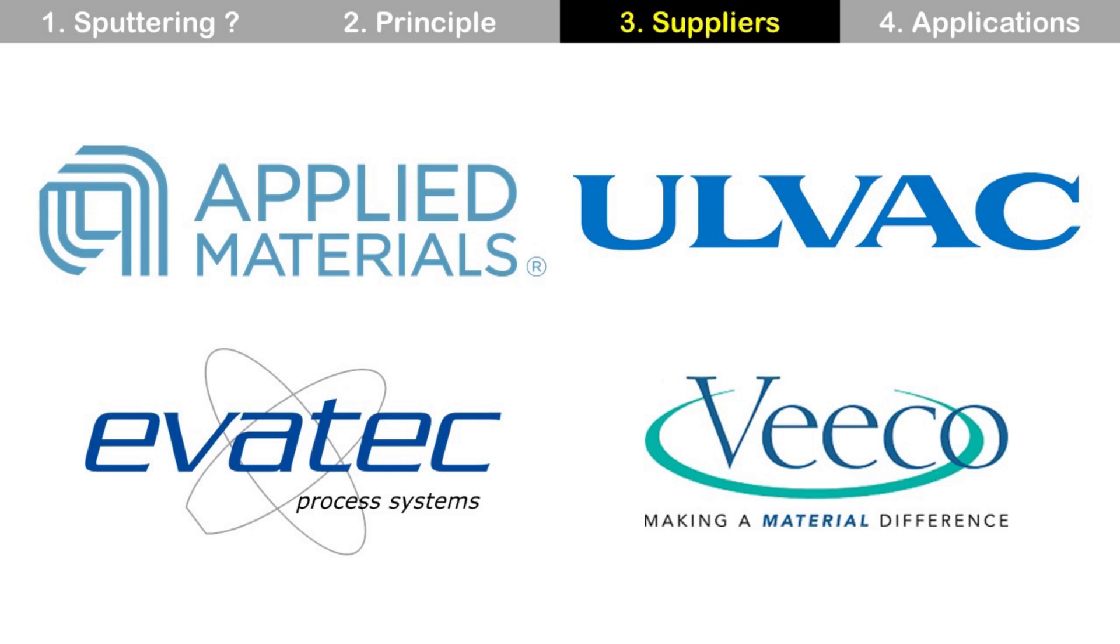Here are some suppliers of sputtering machines: Applied Materials from USA, Ulvac from Japan, Evatec from Switzerland, and Veeco from USA.